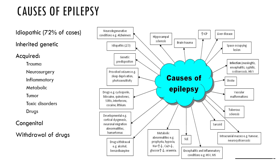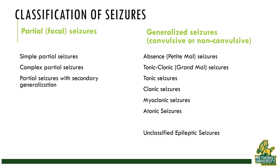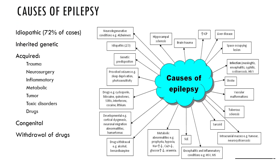In addition to this large group of people whose epilepsy is unexplained, there are people who have acquired epilepsy as a result of trauma, tumor, brain surgery, infection, or inflammation. Other causes include drugs, toxic disorders, metabolic disorders, congenital causes, and inherited or genetic causes of epilepsy.